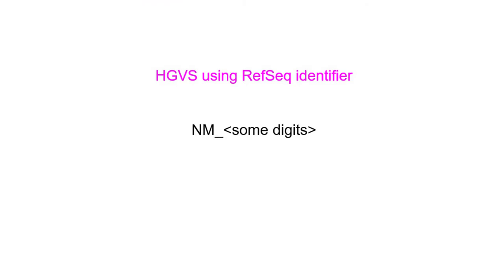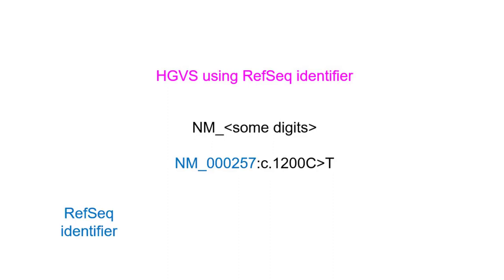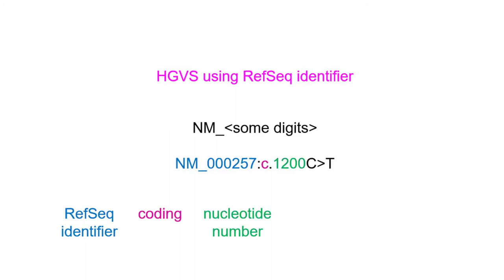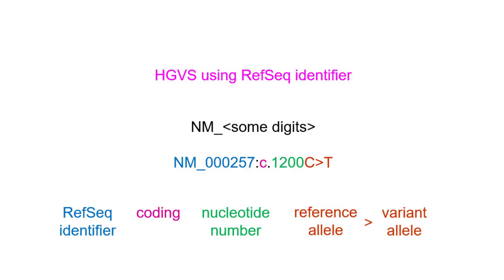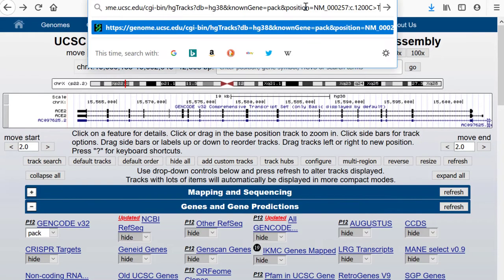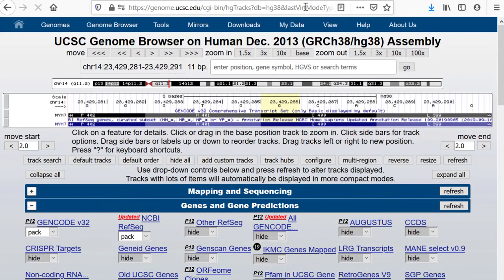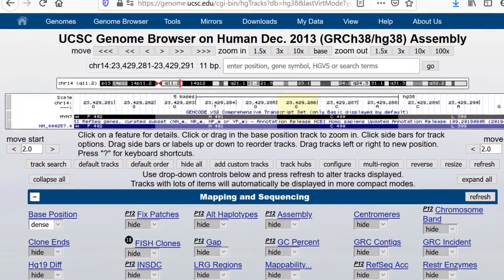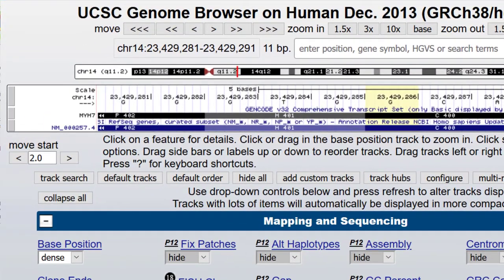RefSeqs are in the form NM_underscore some digits. For example, NM_000257:c.1200C>T is HGVS that identifies the 1200th nucleotide of a coding DNA, which will be in the 400th amino acid. Let's add that to the URL as a key value pair specifying location — ampersand position equals the HGVS designation — and we'll drop the hide tracks parameter. The browser will find the location and highlight the nucleotide with five bases of padding on either side.